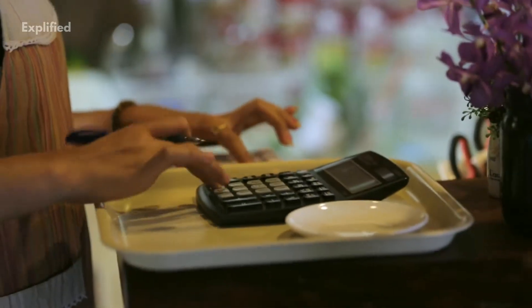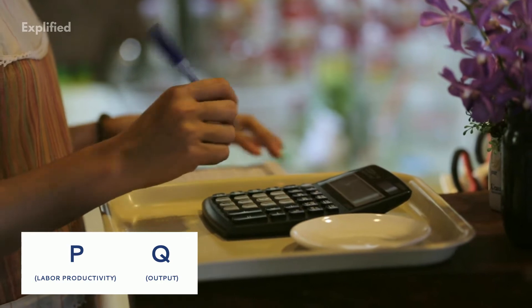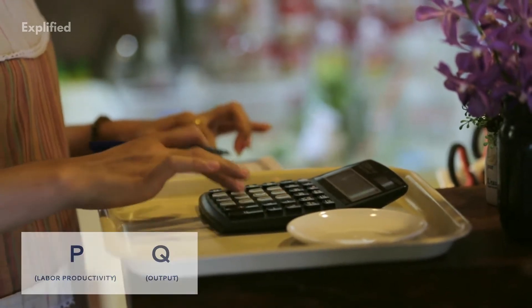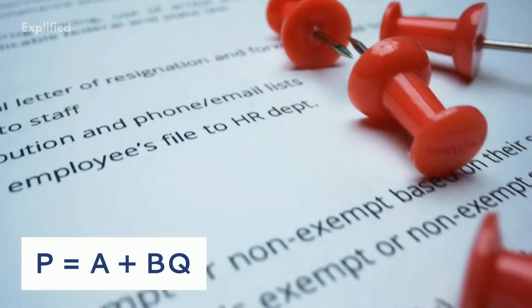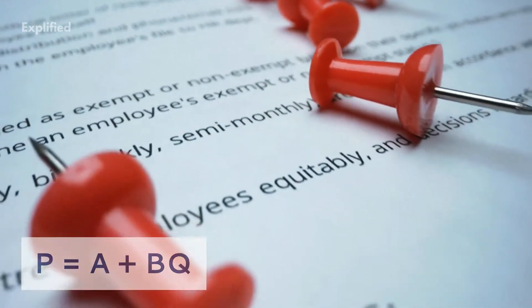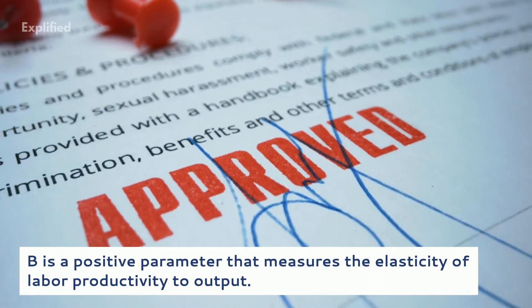Let P and Q represent the growth rates of labor productivity and output in manufacturing, measured in logarithmic terms. Verdoorn's law was originally estimated as P equals A plus BQ, where B is a positive parameter that measures the elasticity of labor productivity to output.